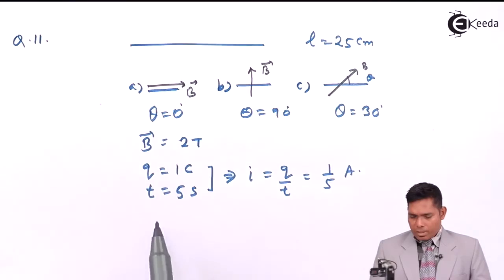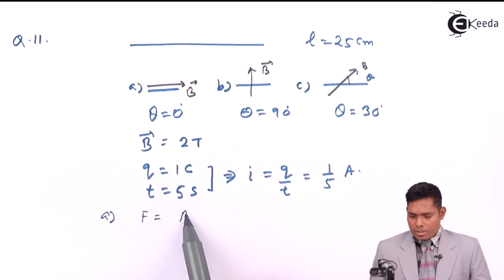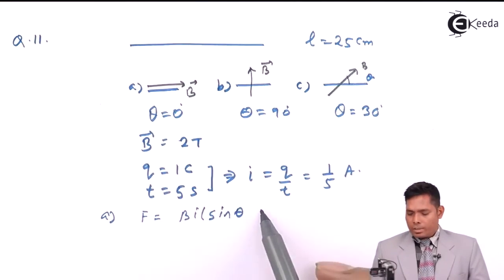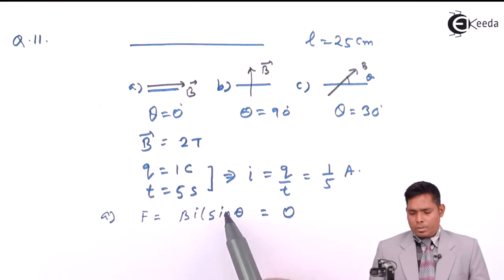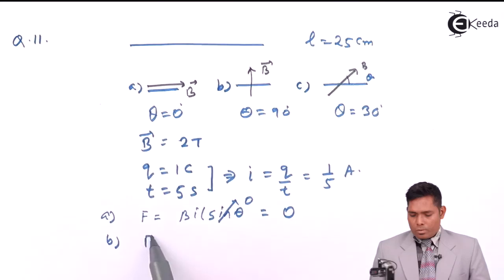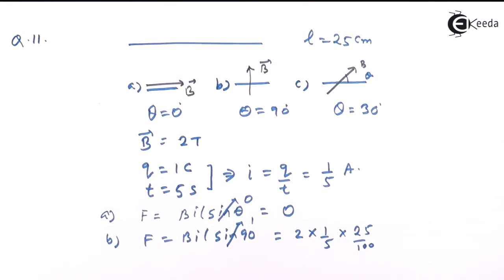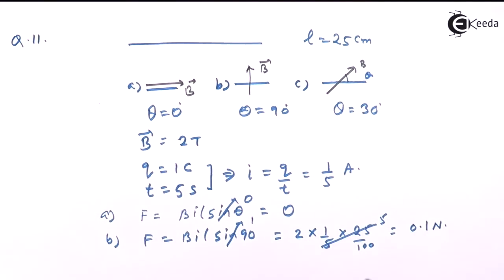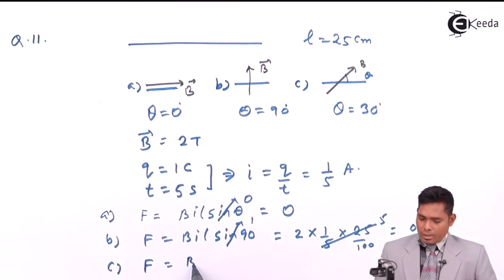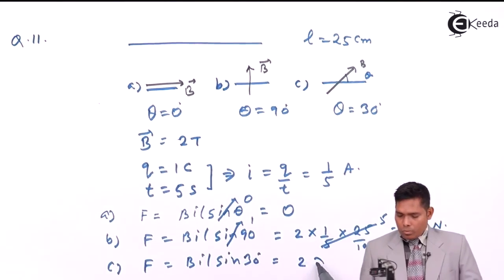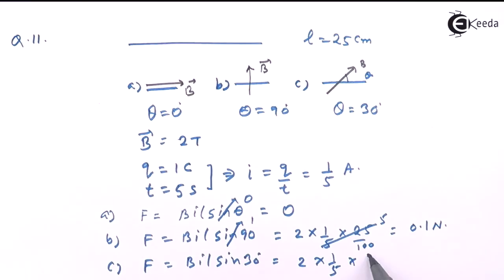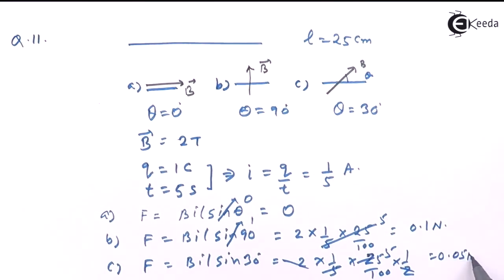For case 1 (θ=0°): F = BIL sinθ = BIL sin0° = 0, since sin0° = 0. For case 2 (θ=90°): F = BIL sin90° = BIL = 2 × (1/5) × (25/100) = 0.1 Newton. For case 3 (θ=30°): F = BIL sin30°, giving the corresponding force. These are the answers to this question.